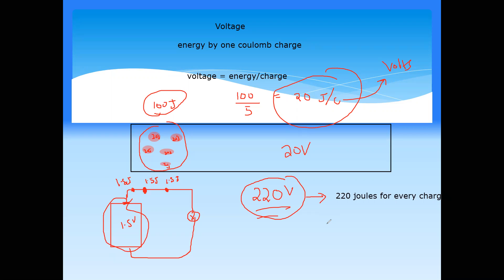High-tension wires carry 11,000 volts — 11 kV. For human tolerance, it varies from person to person. At 220 volts, if the current passes for a longer period of time, a person can die, because electrical charges flowing through the body transfer energy and ionize the blood.